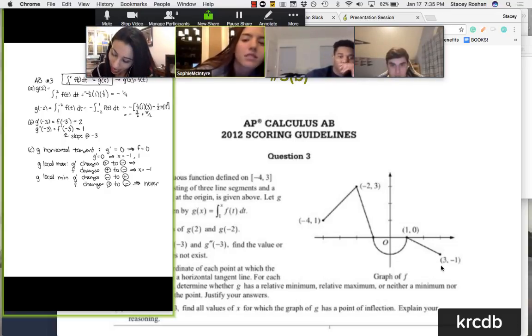So at X equals negative 1, we have a local max, right? A local max.